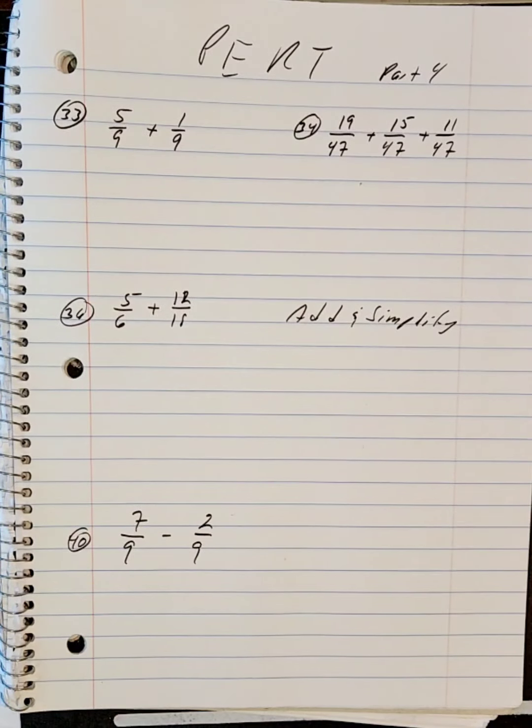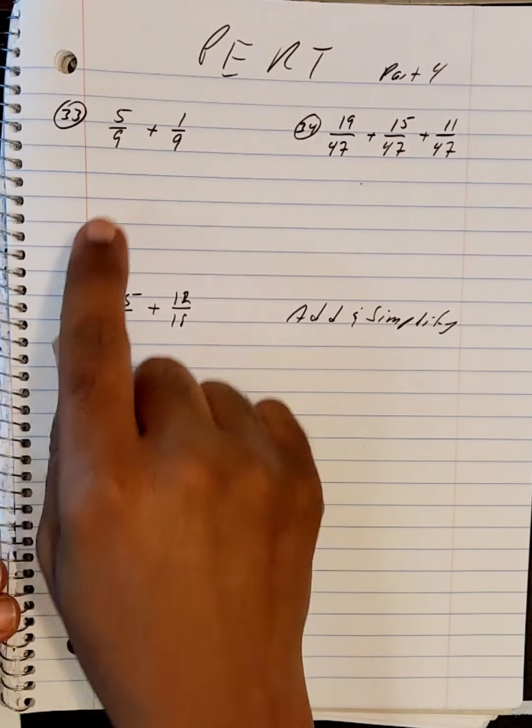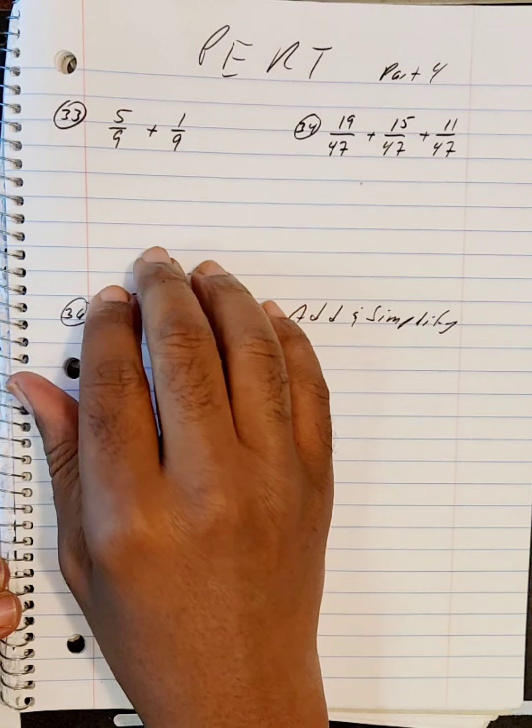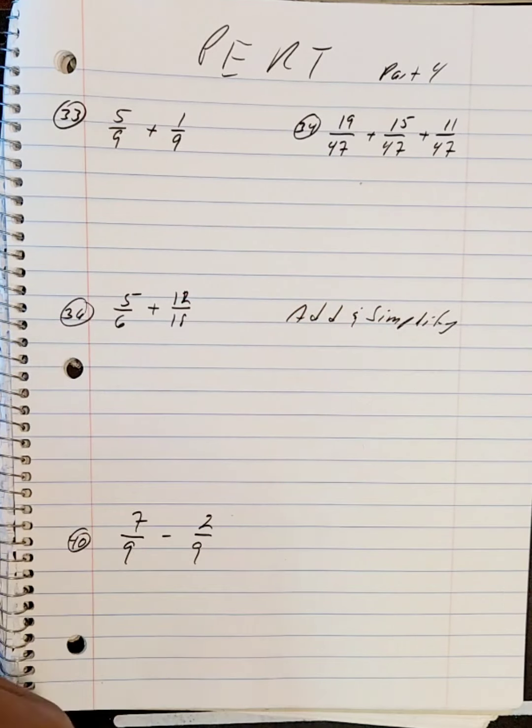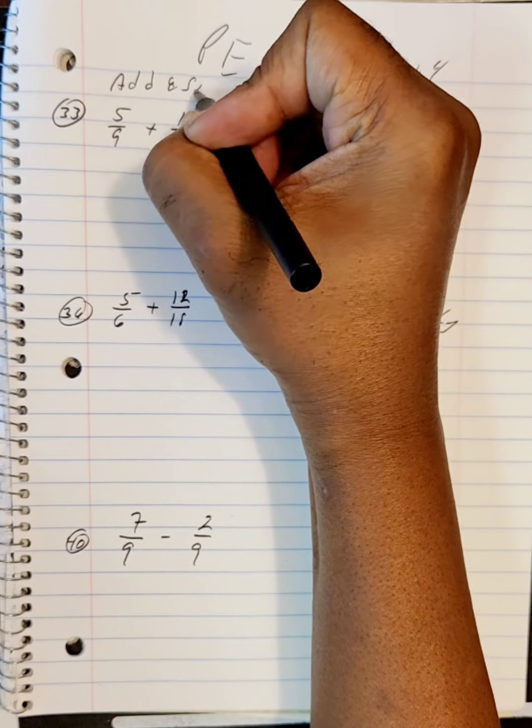Okay, we're doing the PERT. This will be part four, adding fractions. When adding fractions, you have to have the same denominator. And they ask us to simplify. So the important thing is not just adding, we want to also simplify.